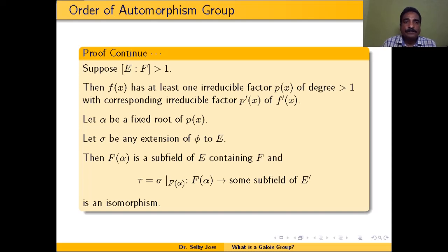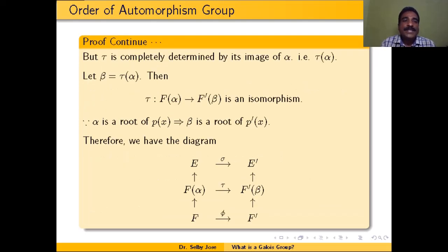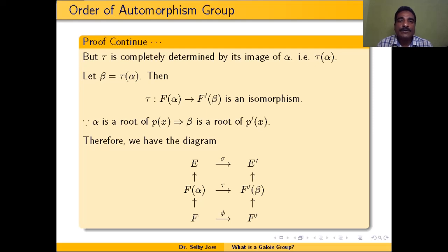Since τ is an isomorphism, it is completely determined by its image of α, that is τ(α). Suppose τ(α) = β. Then τ is an isomorphism from F(α) to F'(β). Also, since α is a root of P(x), β is also a root of P'(x). So we have shown: if τ is an isomorphism from F(α) to F'(β) with τ(α) = β, then β is a root of P'(x).